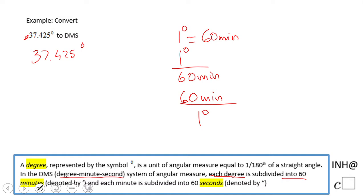We're going to take the decimal part, 0.425 degrees, and multiply it by 60 minutes over 1 degree. Always look for cancellation of units.